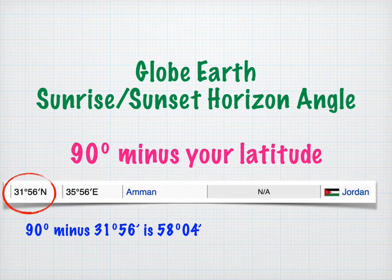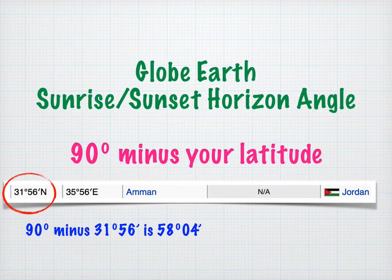Let's take a look at our example. Our sample image showed a 58 degree angle, so it's possible that photo was taken in Amman, Jordan, which has a latitude of 31 degrees 56 minutes. This is a sample only — please don't draw any conclusions, as I just made up this data.